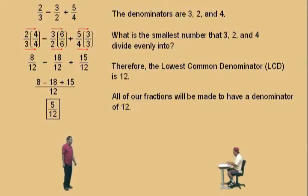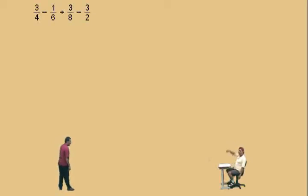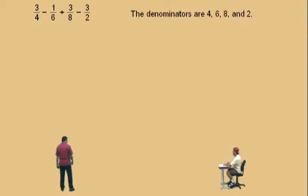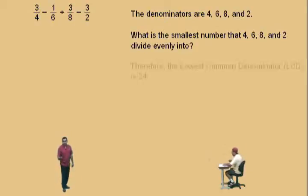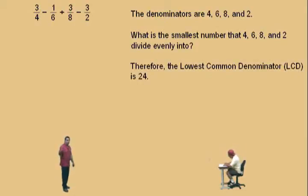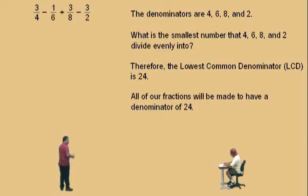It's not too bad — you've just got to practice. Let's do one more problem, and we'll make it an attitude adjustment problem. Here we go, Charlie: three-fourths subtract one-sixth plus three-eighths subtract three-halves. Don't get scared! What are our denominators? Four, six, eight, and two. What is the smallest number that four, six, eight, and two divide evenly into? It's twenty-four. There are some other techniques for finding the lowest common denominator — you can talk to your teacher — but our lowest common denominator is twenty-four, so all fractions can be written with that denominator.